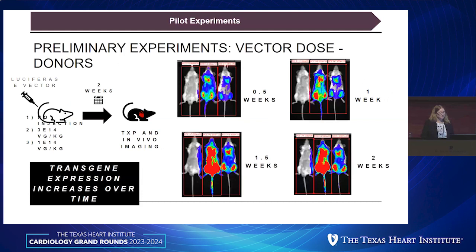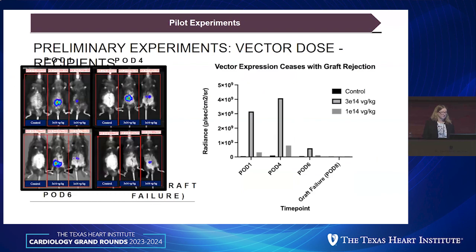We can't make transgenic animals for everything — it's too time-consuming and costly. So we're also developing methods to utilize viral vectors carrying our targets and evaluate them in a mouse heterotopic heart transplant model. We can take an AAV with luciferase, provide it retroorbitally, and a significant amount goes to the heart. We then take those hearts out and do heterotopic transplants, visualizing glowing hearts in the abdomen using an in vivo imaging system.